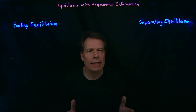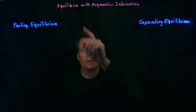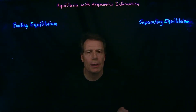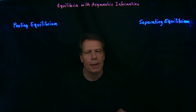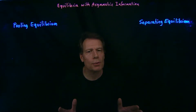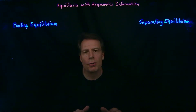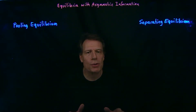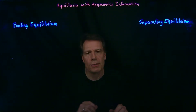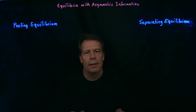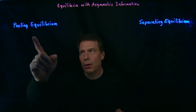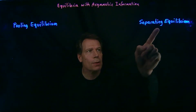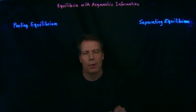We can now talk about the kinds of equilibria that might emerge in markets with asymmetric information. There are two extreme types of equilibria that could emerge: one in which no information has been revealed, and another in which all information has been revealed. The first we call a pooling equilibrium and the second a separating equilibrium.